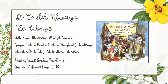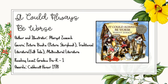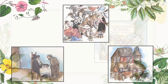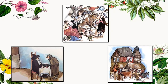Our next text, It Could Always Be Worse, is a Jewish folktale retold by Margot Zemach and is about a man who thinks that he lives a very difficult life. Desperate for help, he seeks the counsel of his rabbi, who gives him some unexpected advice. Yet, with trust he obeys, though it takes a while before he understands the lesson that he is being taught.